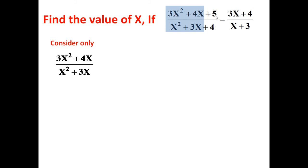3x square plus 4x plus 5, forget about 5 and x square plus 3x plus 4, forget about 4. Write down only variable terms and their coefficient. 3x square plus 4x divided by x square plus 3x. Let us simplify it. Is equal to...